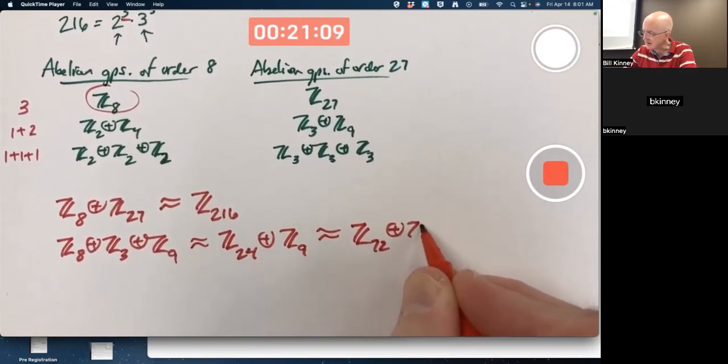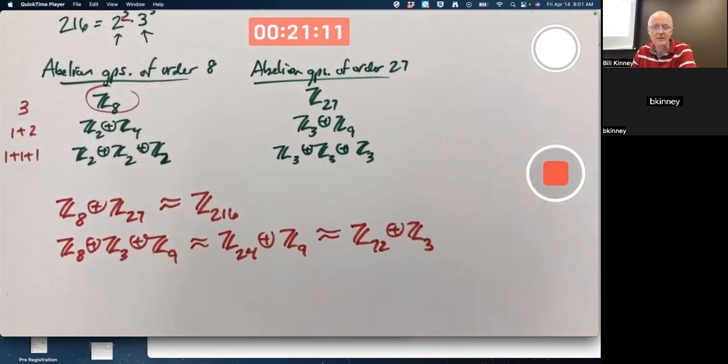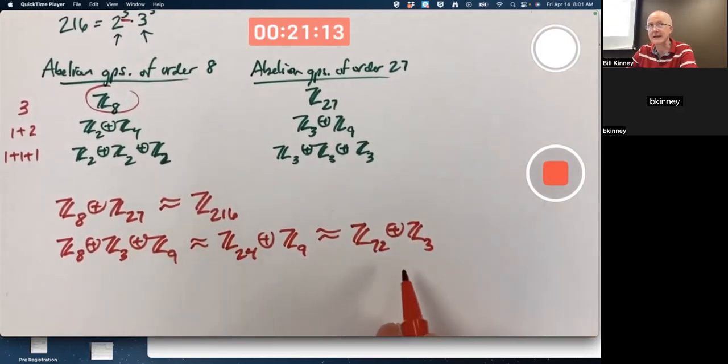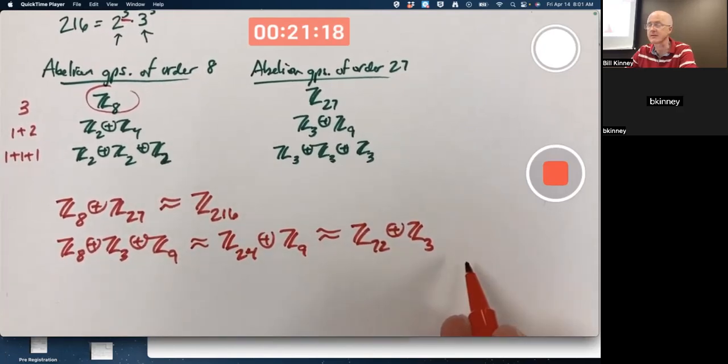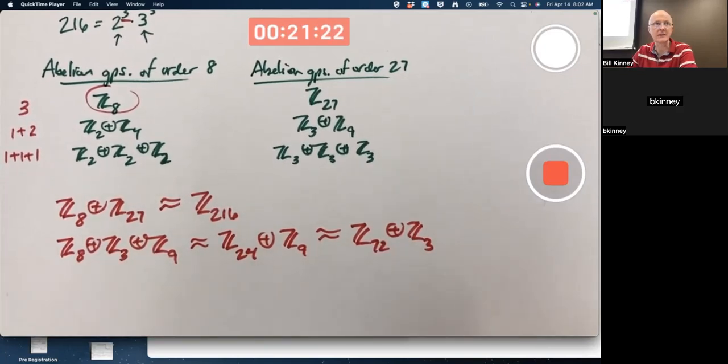But I can't combine these in any way because 24 and 9 are not relatively prime and 72 and 3 are not relatively prime. Any one of these three answers is okay for this possibility. It's perhaps easiest to just focus on the one that's expanded the most if you're trying to list them out as fast as you can.